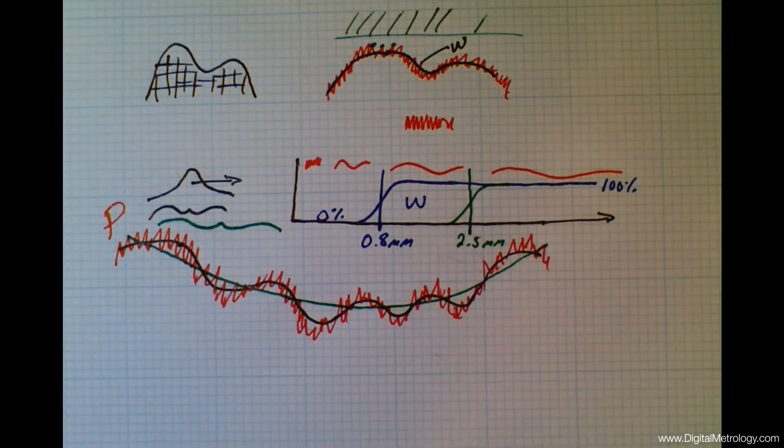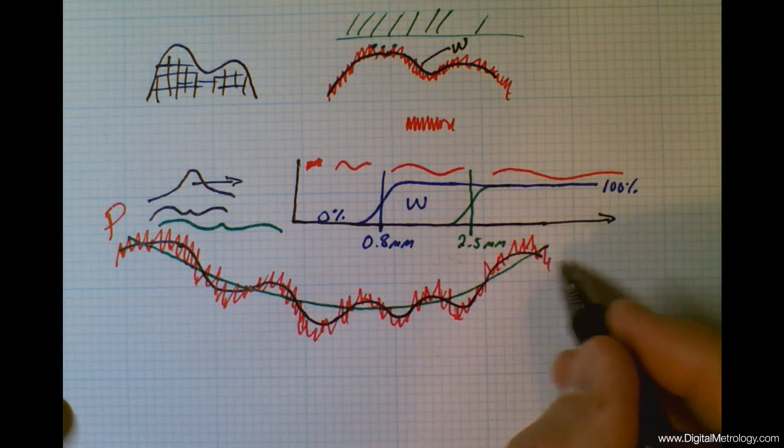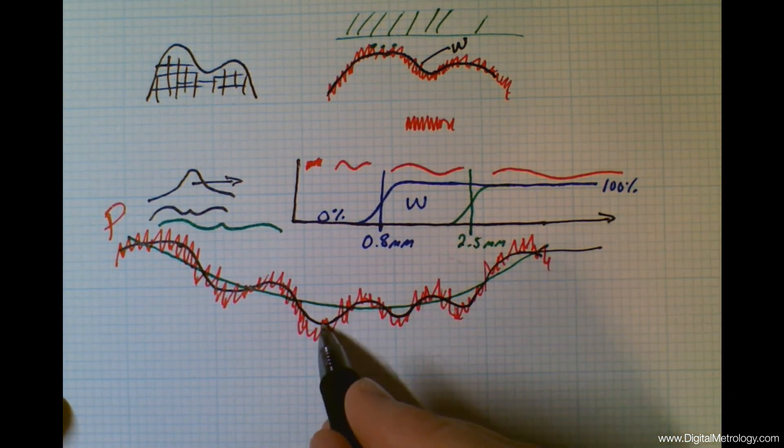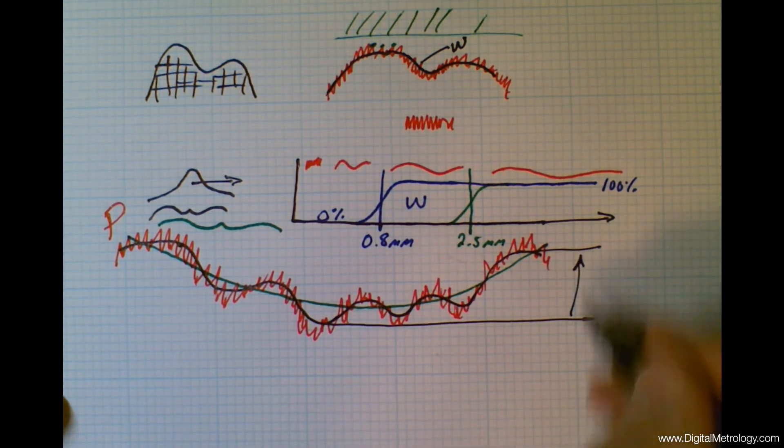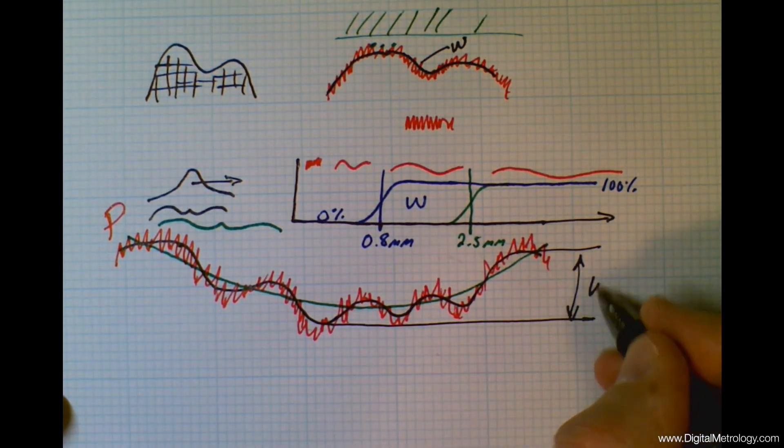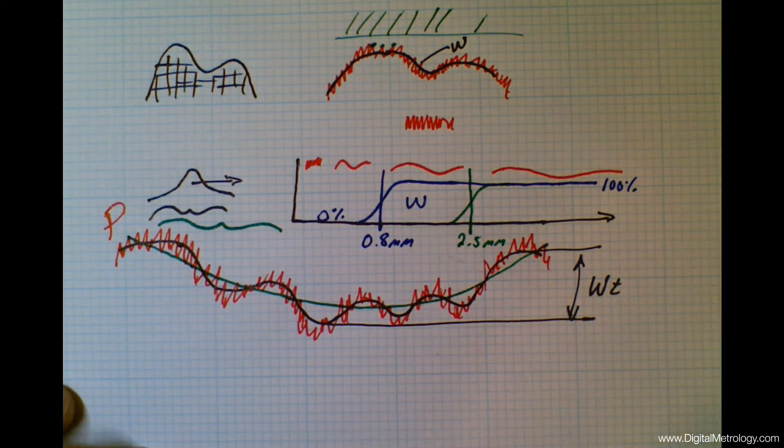In any case, we're going to extract this shape of waviness. And let's go back to the blue one. And we're going to maybe look at the peak to valley height of that waviness profile. And that is reported as waviness total, WT.